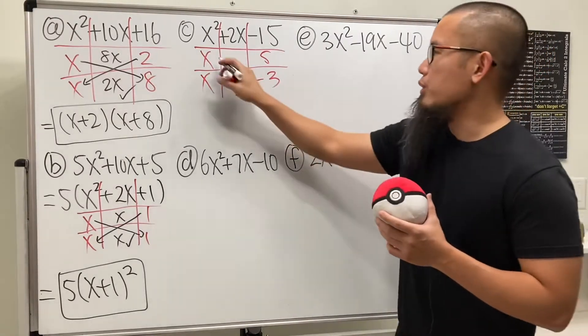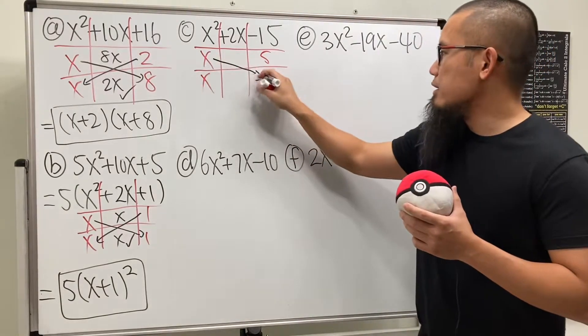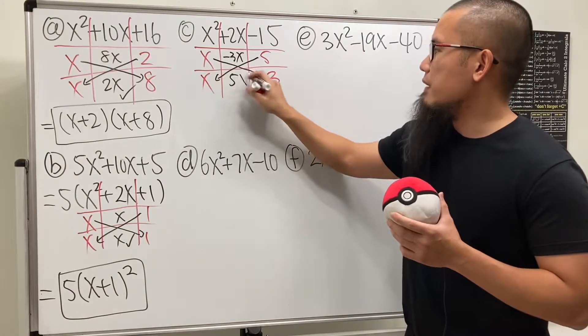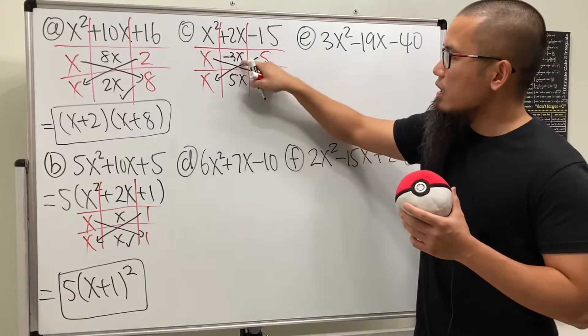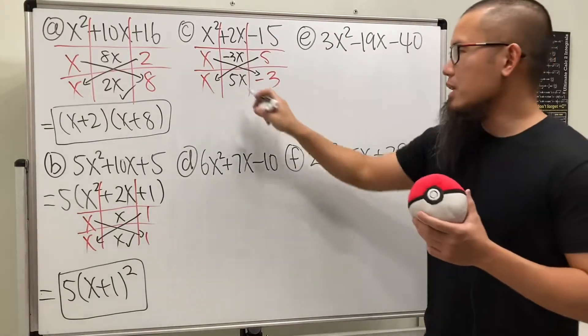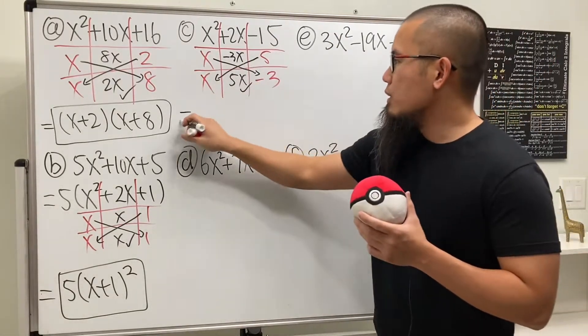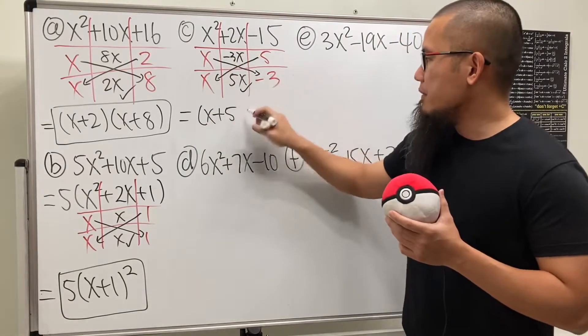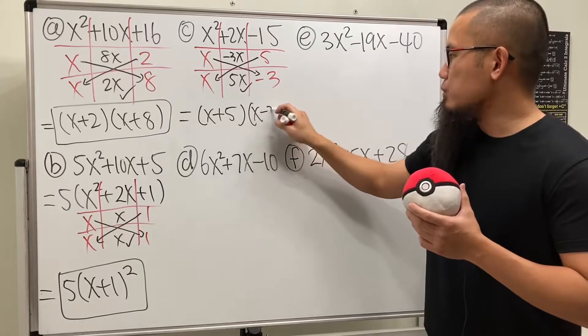Does this work? Let's go ahead and do this to check. x times negative 3 gives us negative 3x. 5 times x gives us 5x. Together we do end up with the 2x. So again, this checks. So we have x plus 5, and then the other one is x minus 3. Done.